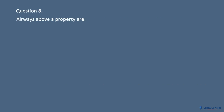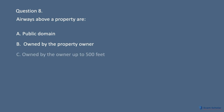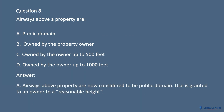Question 8. Airways above a property are: A. Public domain. B. Owned by the property owner. C. Owned by the owner up to 500 feet. D. Owned by the owner up to 1,000 feet. Answer: A. Airways above property are now considered to be public domain. Use is granted to an owner to a reasonable height.